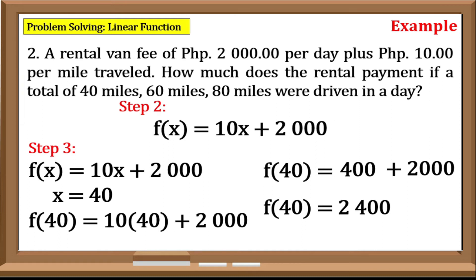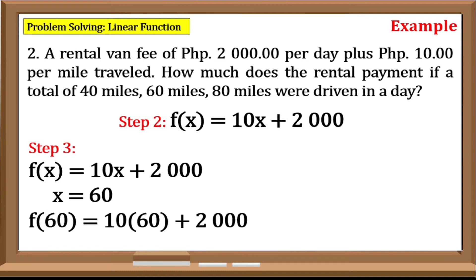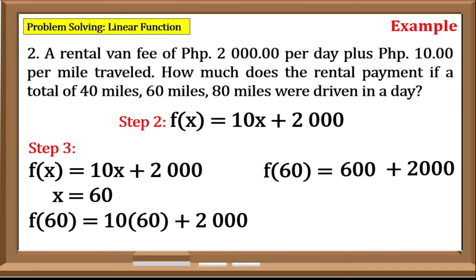Now let us have 60 for the value of x. f(60) = 10 times 60, plus 2000. Simplify: 10 times 60 equals 600, plus 2000, that is equal to 2600.